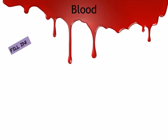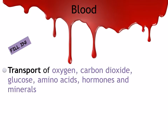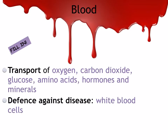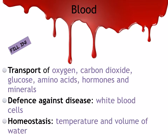Blood is the key ingredient in horror movies and it's got many functions. Do you know why blood is red? This is because it's got a protein called hemoglobin in the red blood cells that carry the oxygen. Blood also transports carbon dioxide, glucose, amino acids, hormones, and minerals. White blood cells help fight against disease and foreign matter. And blood also helps to keep the environment of the body constant — we call this homeostasis. Temperature and the volume of water are examples.